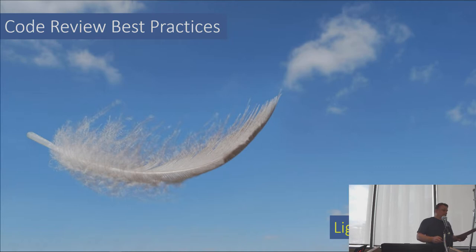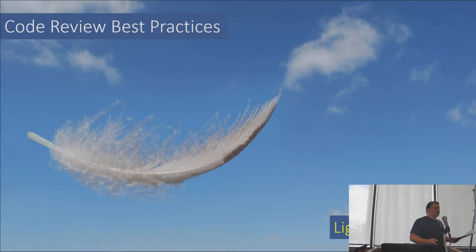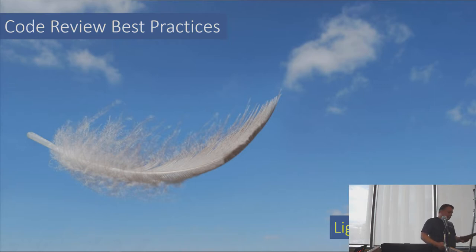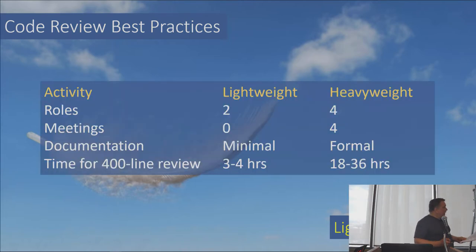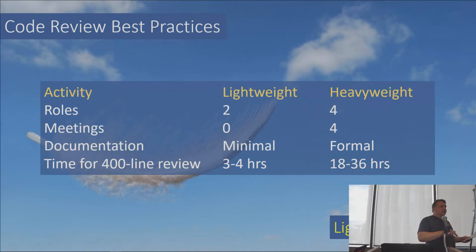Over the decades, a lot of research has gone into heavy-weight code inspections — a rigid process, but effective. It takes about 18 hours for a 400-line code review, involving several participants and many hours in joint meetings. According to the Cisco research, while heavy-weight reviews take five times as long, with the right tools and best practices, your regular tool-facilitated reviews can find just as many bugs and be just as effective.